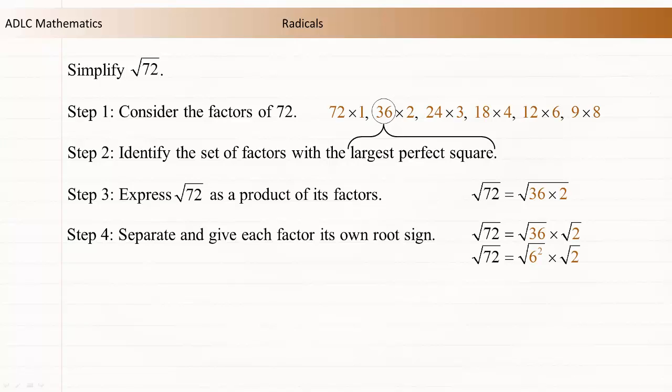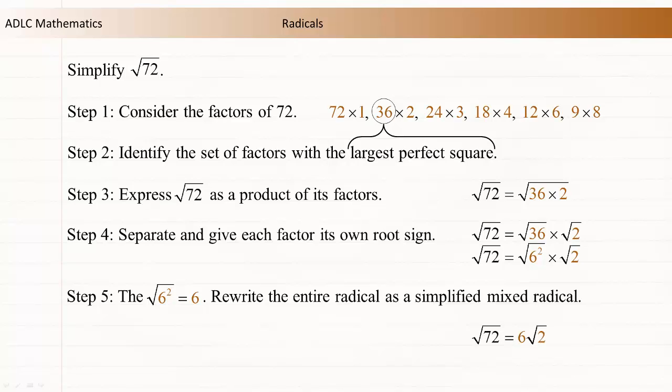The square root of 36 can be rewritten as the square root of 6 squared. The square root of 6 squared is 6. Rewrite the entire radical as a simplified mixed radical. The square root of 72 is equal to 6 root 2.